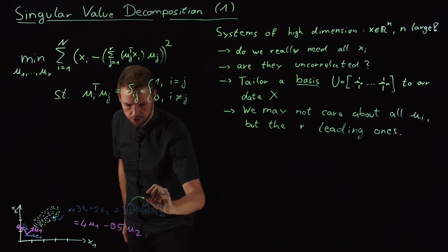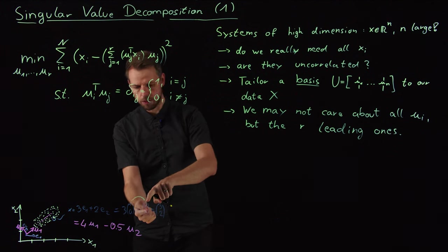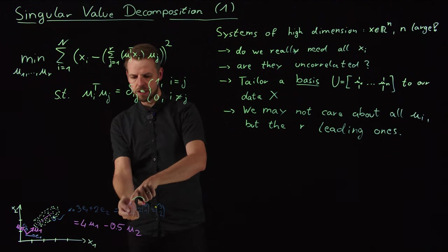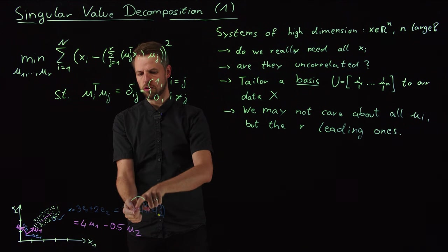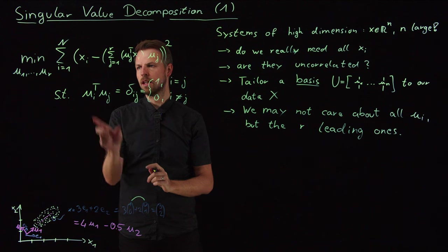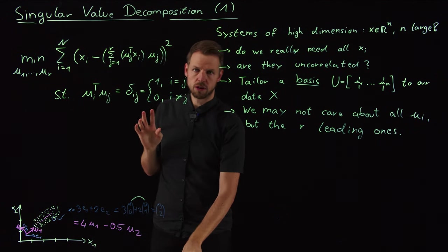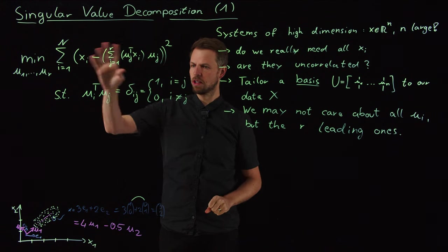And they are orthogonal to one another. ui times uj gives me a 0. And you see this here. If I did e1 times e2, this would give me a 0. So e1 transpose times e2. And if I take e1 transpose times e1, this gives me unit. So this is an orthonormal basis. It's orthogonal and unit length. And this is what we can demand here too. And so now you see we have formalized this as a problem.